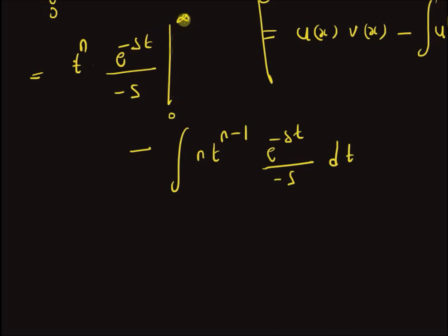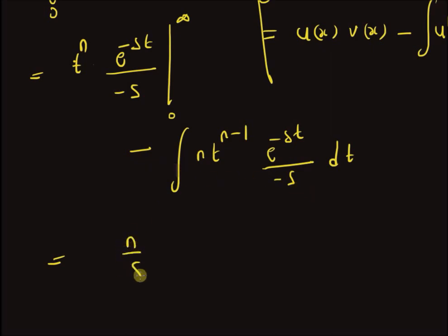This boundary term is equal to zero for both limits: e^(-∞) = 0, and at t = 0 the term also equals zero. So we can ignore it, and we are left with n/s multiplied by the integral from 0 to infinity of t^(n-1) e^(-st) dt.